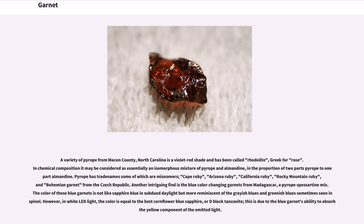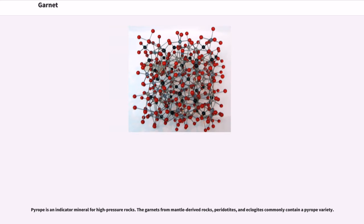Pyrope has trade names, some of which are misnomers: Cape Ruby, Arizona Ruby, California Ruby, Rocky Mountain Ruby, and Bohemian garnet from the Czech Republic. Another intriguing find is the blue color-changing garnets from Madagascar, a pyrope-spessartine mixed variety. The color of these blue garnets in subdued daylight is more reminiscent of grayish blues and greenish blues sometimes seen in spinel. However, in white LED light, the color is equal to the best cornflower blue sapphire or D-block tanzanite, due to the blue garnet's ability to absorb the yellow component of the emitted light. Pyrope is an indicator mineral for high-pressure rocks. Garnets from mantle-derived rocks — peridotites and eclogites — commonly contain a pyrope variety.